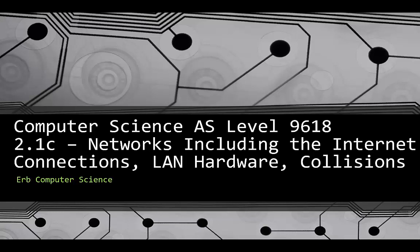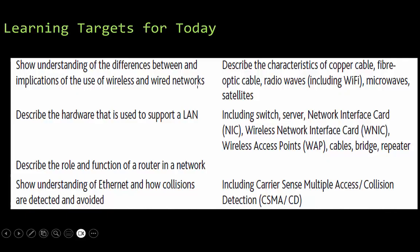In this video we're going to take a look at Computer Science AS Level 9618 networks, including the internet, talking about the connections, LAN hardware, and collisions. There's a lot to get through here so let's get started.